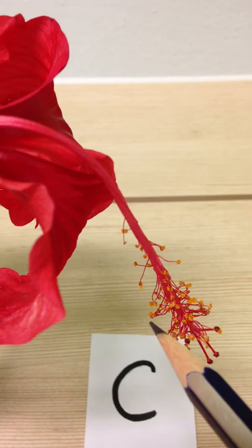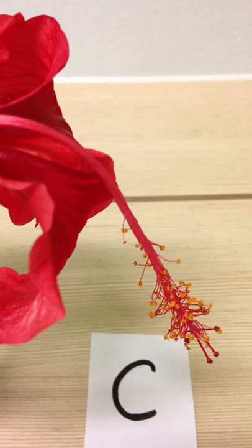Part C. Underneath the little yellow fluffy bits, there's a little blob on the end. Here, a little blob. What's that little piece there called?